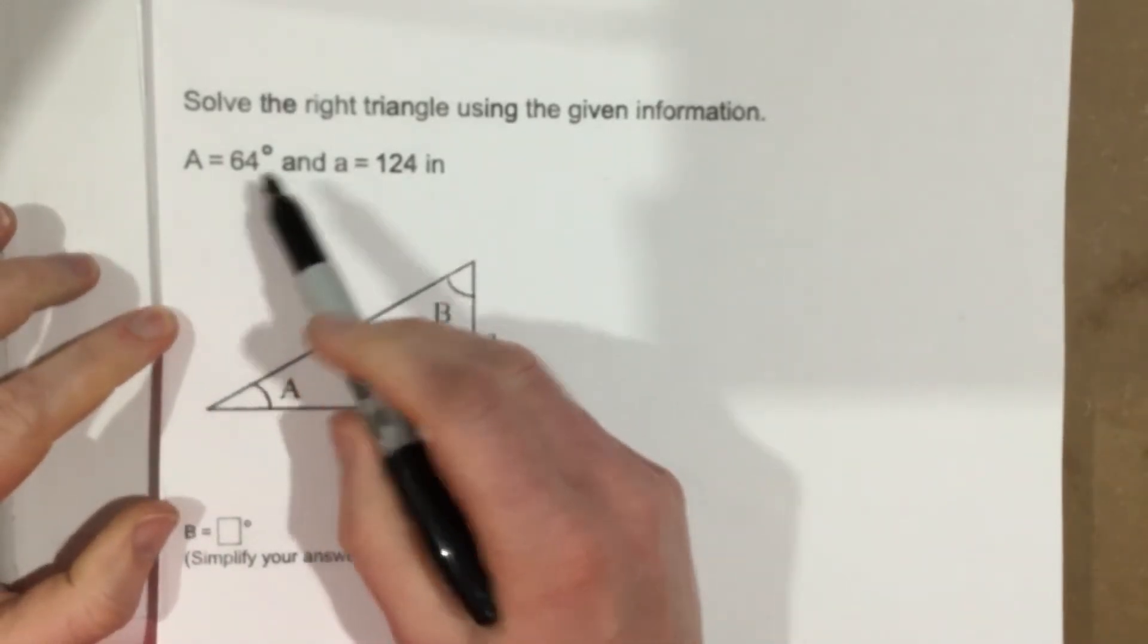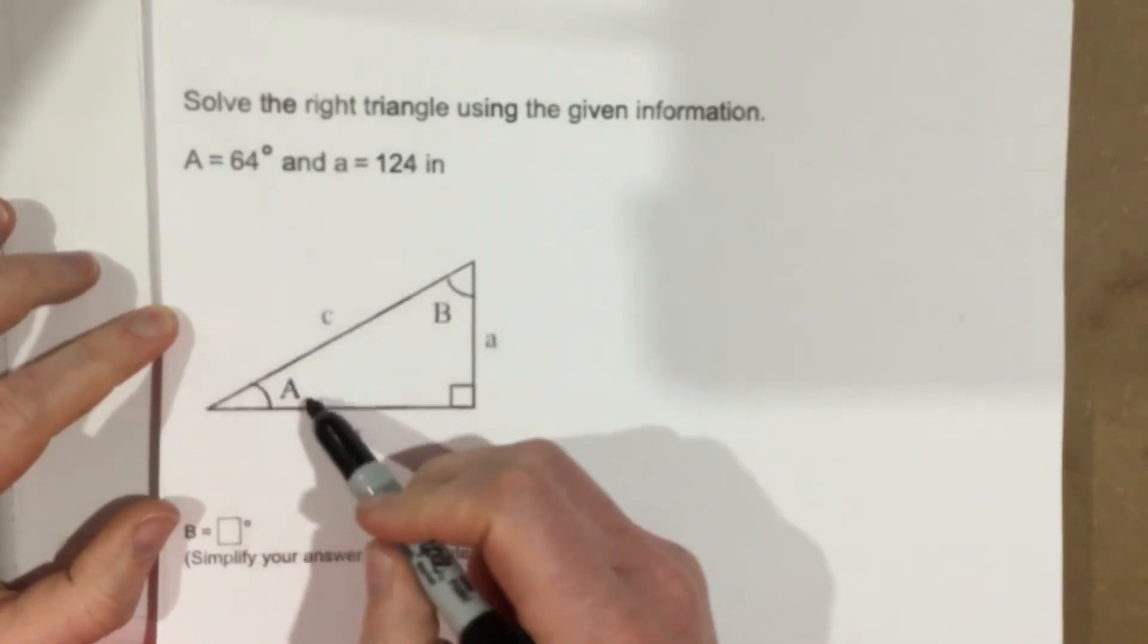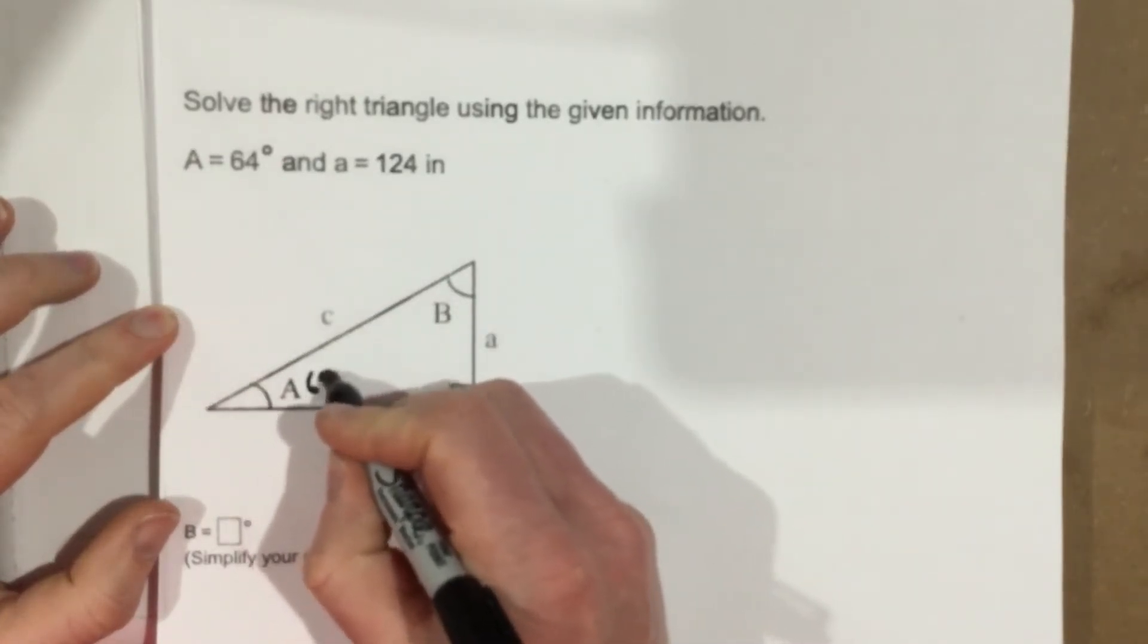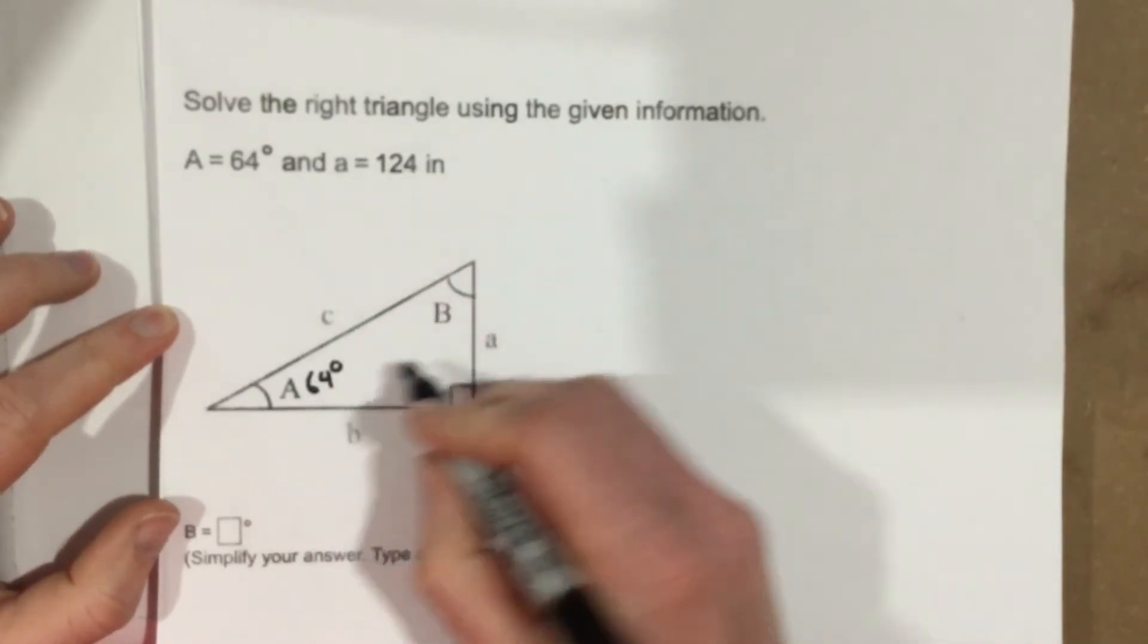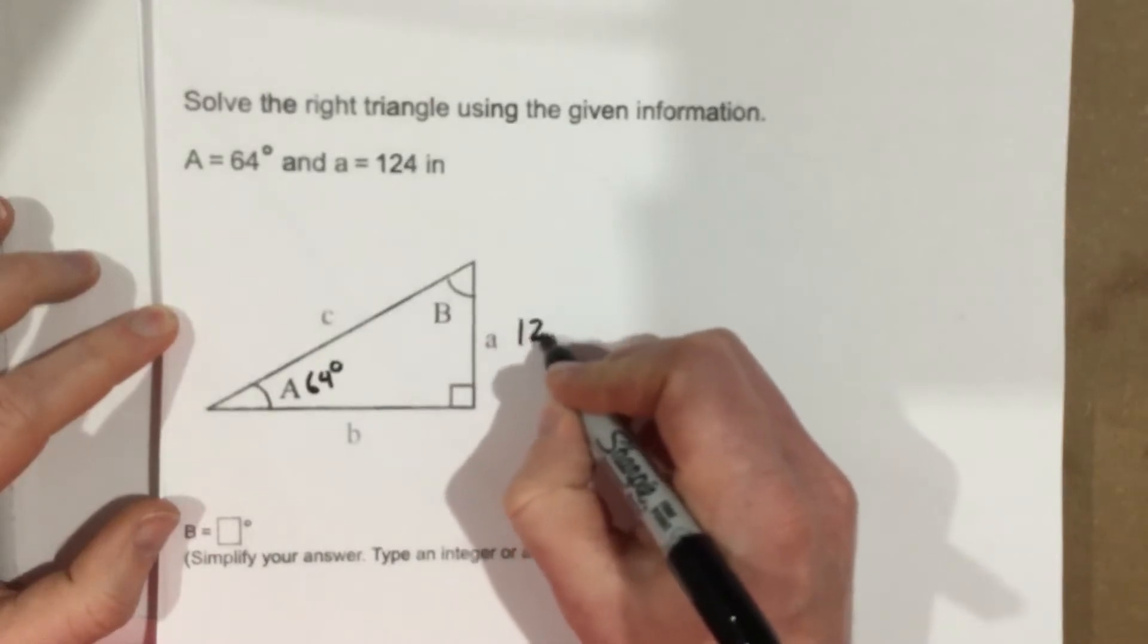They give us A is 64 degrees, that's big A, and that's the angle, so we know that this is 64 degrees. They give us a, little a, which is opposite of the angle 64, that's 124 inches.